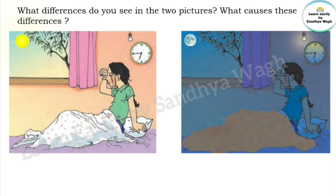So, we can see the things around us. In the second picture, it is evening — 6:45 p.m., as you can see the time shown in the clock. As the sun sets, we do not get light from the sun. Therefore, we cannot see things around us clearly. Now, why does this happen?